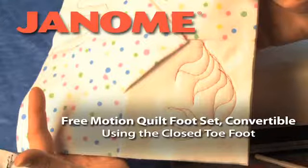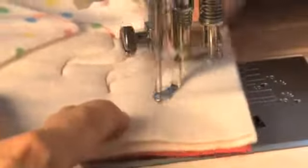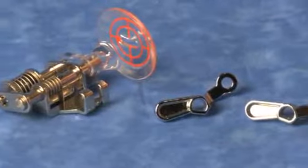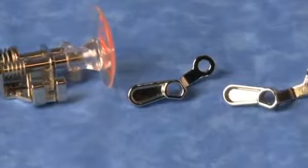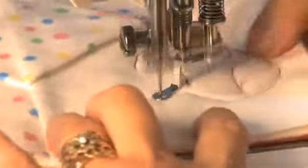Free Motion Quilt Foot Set Convertible using the Closed Toe Foot. The Free Motion Quilt Foot Set allows you to do a variety of free motion stitching techniques on your quilt. The set has three different feet attachments. The Closed Toe Foot is good for general free motion stitching as well as lace and delicate fabrics.